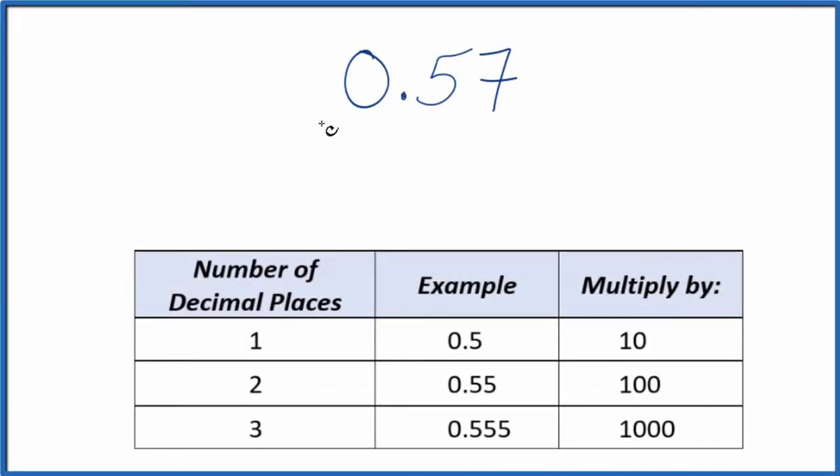If you're asked to write the decimal 0.57 as a fraction, here's how you do it. Let's call this 0.57 over 1. We're just dividing by 1, we haven't changed the value, but now we have the start of a fraction.